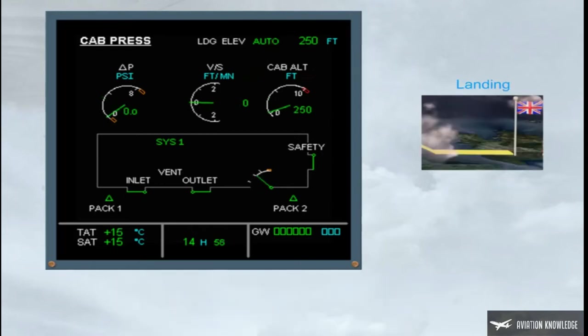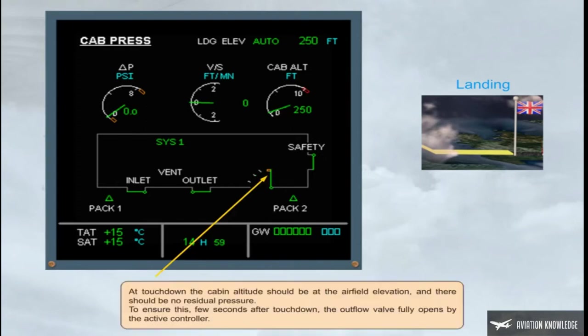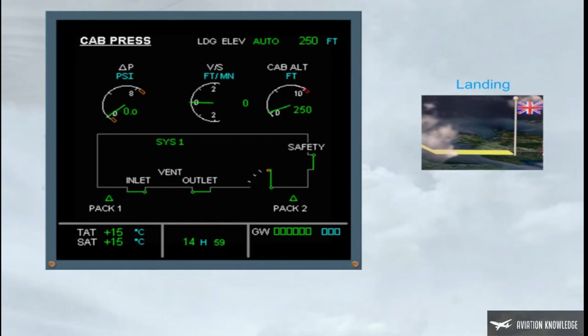At touchdown, the cabin altitude should be at the airfield elevation and there should be no residual pressure. To ensure this, a few seconds after touchdown, the outflow valve fully opens by the active controller. A few seconds after the outflow valve is fully open, an automatic changeover of the system controllers occurs in preparation for the next flight. This happens so that both systems are used equally.